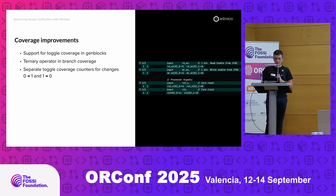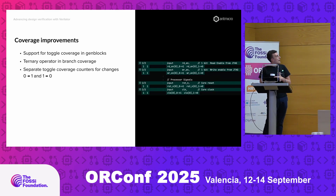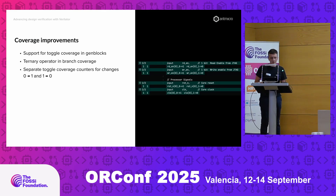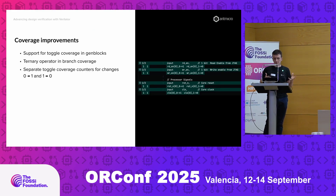We've also been contributing to the coverage part of Verilator. We added support for toggle coverage in generate blocks, which just wasn't there before. We included the ternary operator in branch coverage because it is essentially a statement, and we added separate toggle coverage counters for positive and negative changes, to bring it more in line with other simulators.